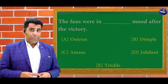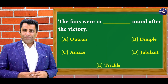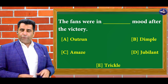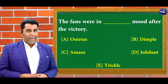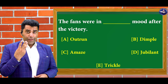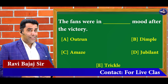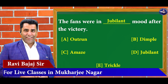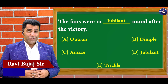So guys, now the same question I'm giving you and you have to find out the right answer. Come on — question, five options aapke saamne. The fans were in dash mood after the victory. Your time starts now. Five, four, three, two, one — over. And yes, the right answer is jubilant. Correct. The fans were in very good mood after the victory.